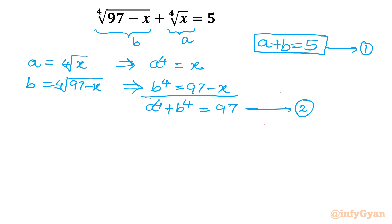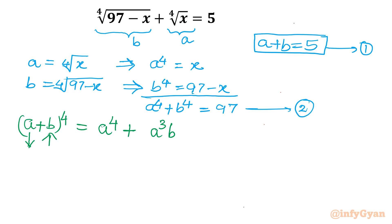Since the power is 4, I am going to write the expansion of (a plus b) to the power 4. The power of the first term decreases and the second term increases. So we have: a⁴ plus 4a³b plus 6a²b² plus 4ab³ plus b⁴. Now for the coefficients, we will use Pascal's triangle.